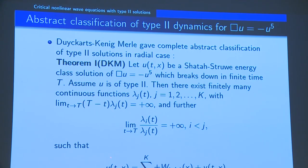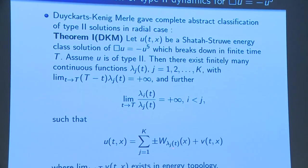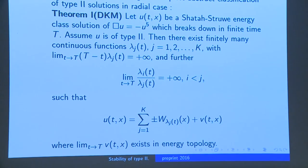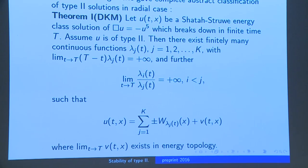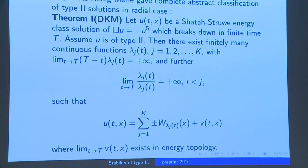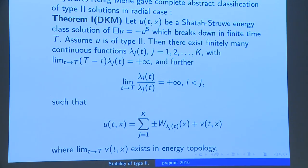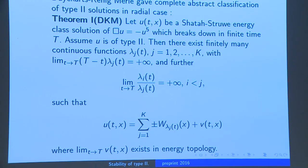You can write your solution as a sum of rescaled profiles, up to sign, plus an error term. The error term you may think of as a solution to the linear wave equation, because close enough to the blow-up time this thing solves the nonlinear wave equation but is well approximated by the corresponding linear flow. So really, you can think of this as a linear object.